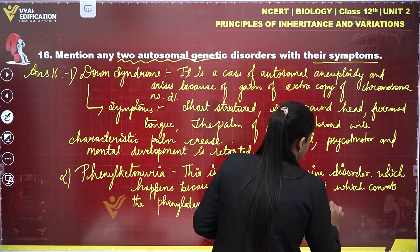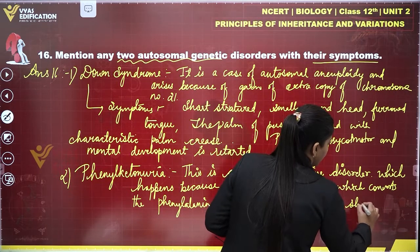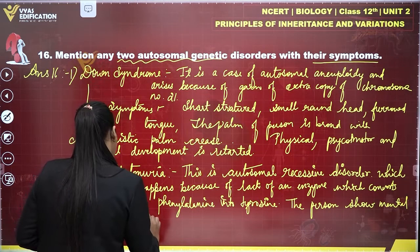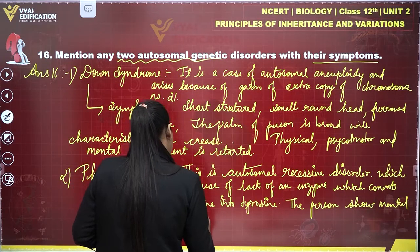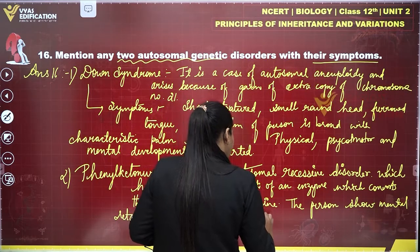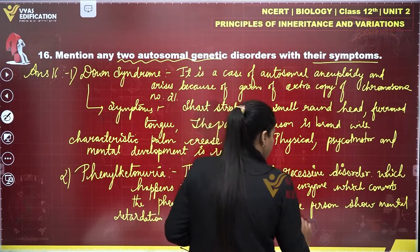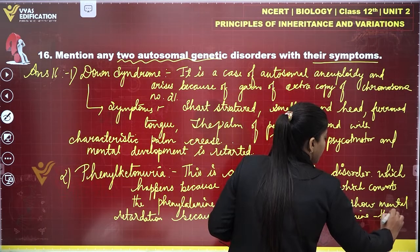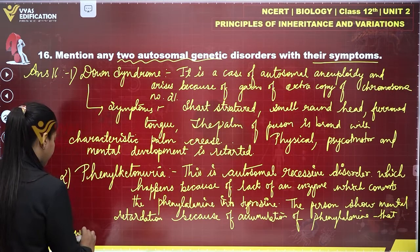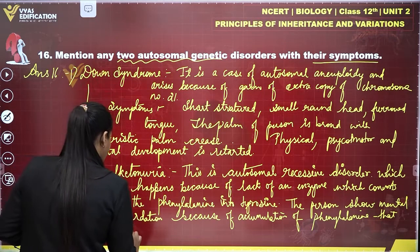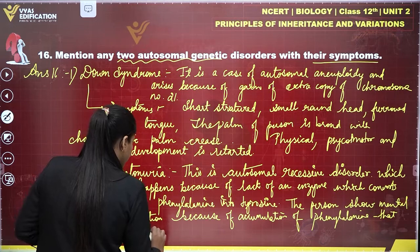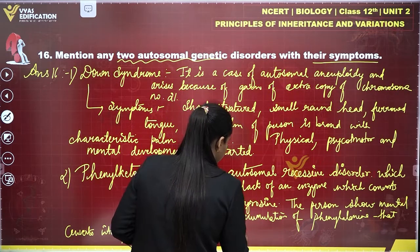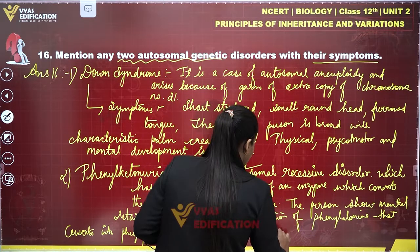The person having phenylketonuria shows mental retardation because of accumulation of phenylalanine, which gets converted into phenylpyruvic acid and is excreted out in the urine.